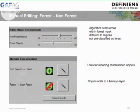During the manual editing you can first adjust the object sizes and find the optimum size of objects for the reclassification. Then you have the box for manual classification, where you can do a redesign of objects — you can reclassify non-forest objects to forest and forest objects to non-forest.